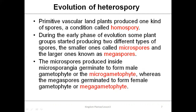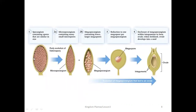Primitive vascular land plants produce one kind of spore, a condition known as homospory — we have already discussed this in detail in the previous lecture. During the early phase of evolution, some plant groups started producing two different types of spores: the smaller ones are the microspores and the larger ones are the megaspores. Microspores produced inside the microsporangium germinate to form the male gametophyte or microgametophyte, whereas megaspores germinate to form the female gametophyte or megagametophyte.